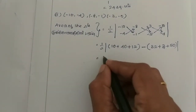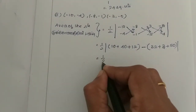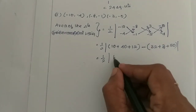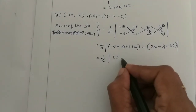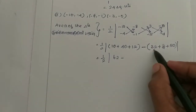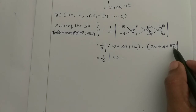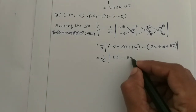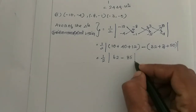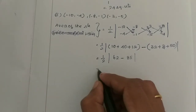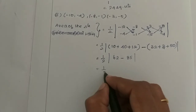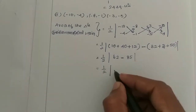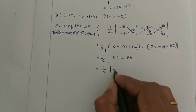Which is equal to half into: the bigger number is 85. Minus — 32 plus 50 is 82, plus 3 is 85. Minus 85. Which is equal to half into — bigger number is 85, that symbol is minus — minus 85.